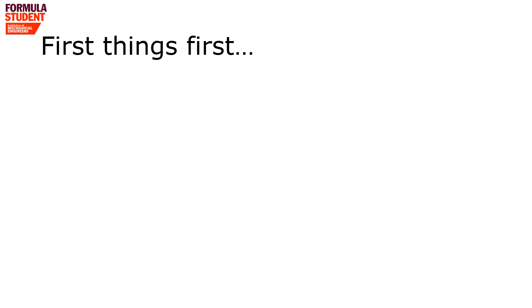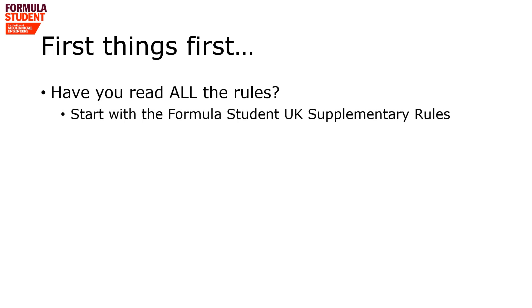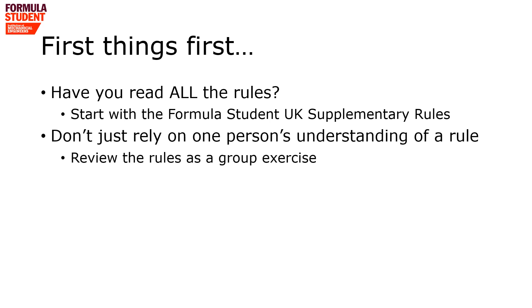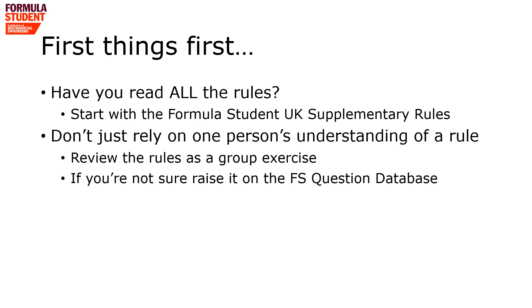The most important thing you need to do is make sure you've read all of the rules. Start with the Formula Student UK Supplementary rules and then look at the differences between those and the main Formula Student rule set. Don't just rely on one person's understanding of a rule — try to do a peer review of the rules, and do it as a group exercise. Make sure you've got a common understanding of what the intent is. And if you're still not sure, raise it as a question on the Formula Student Questions database.